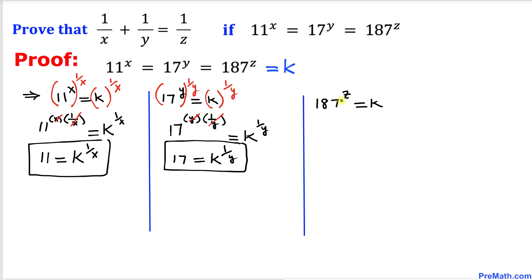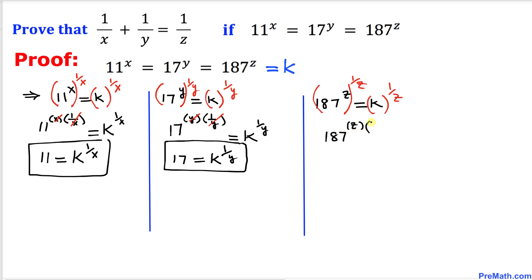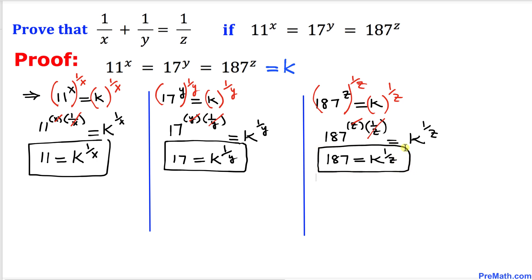Finally, focusing on 187^z = k, I want to isolate 187. Taking the power of 1 over z on both sides, we get 187^(z · 1/z) = k^(1/z). The z and 1/z cancel, so we get 187 = k^(1/z).